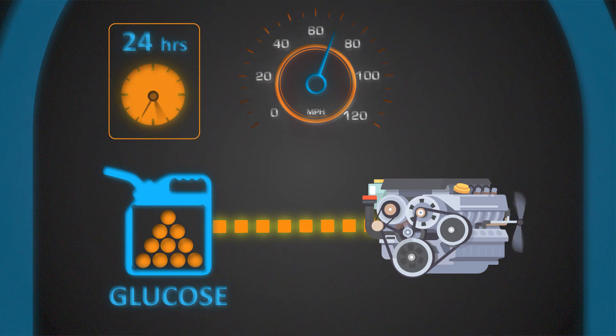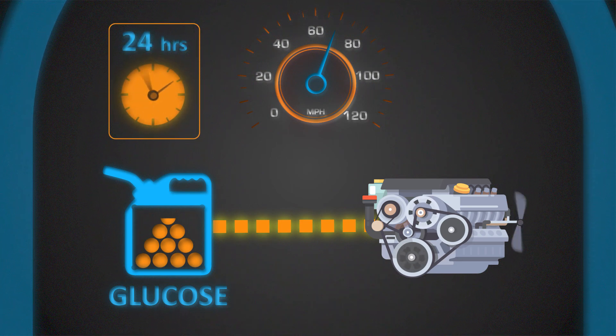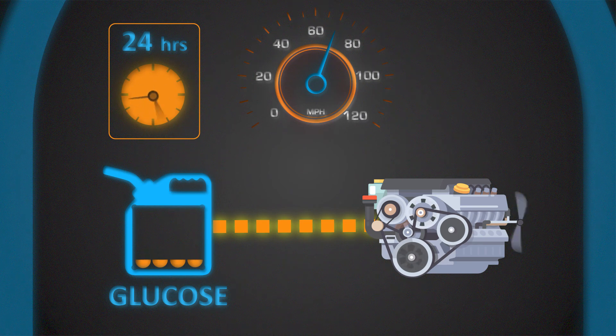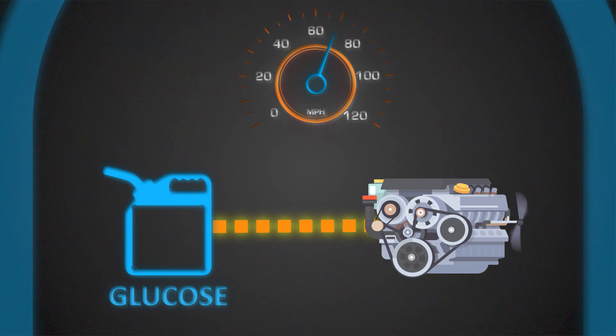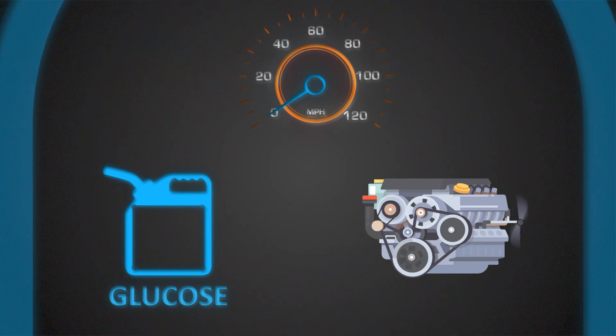But when you don't eat for several hours, your body doesn't get this glucose, so it must find another energy source, much like a power plant that runs out of coal and must switch to burning natural gas.